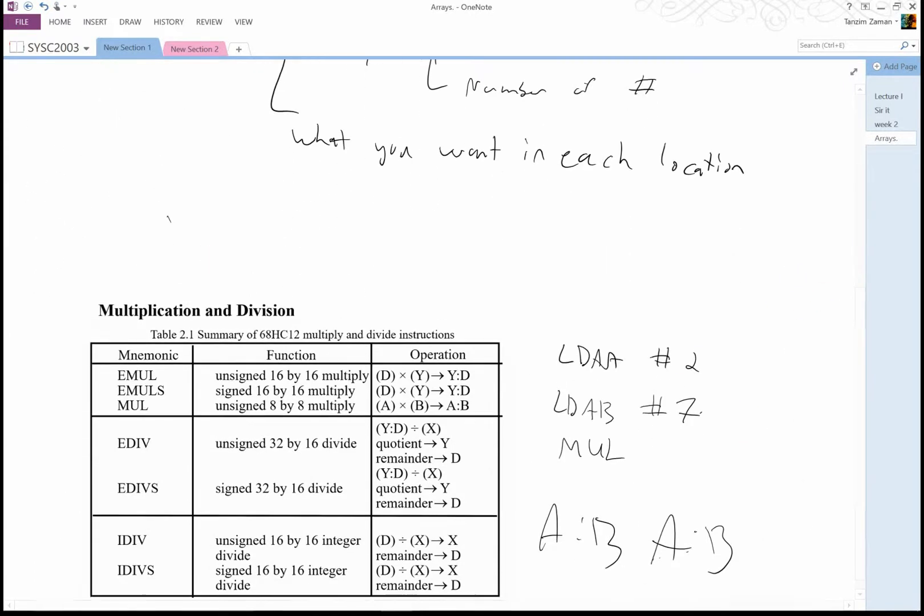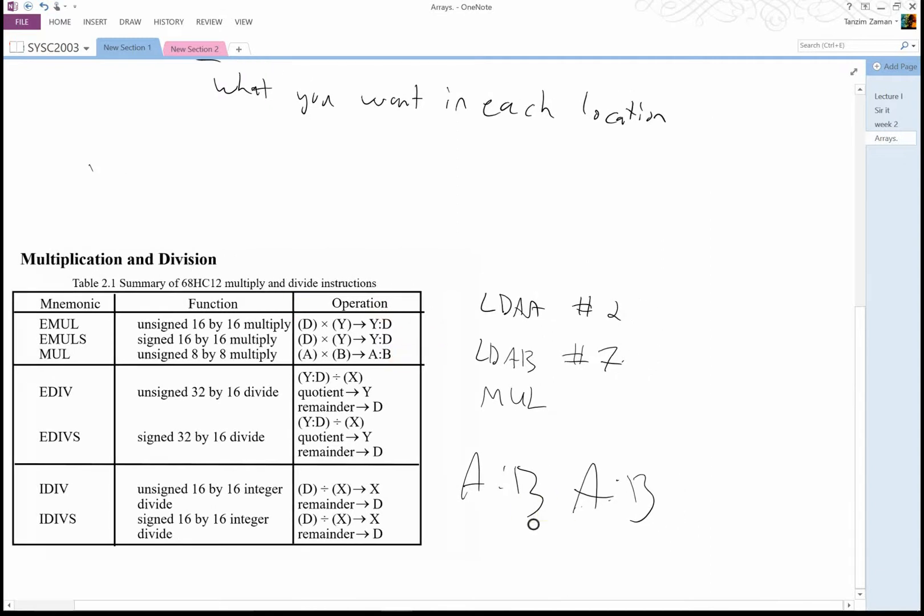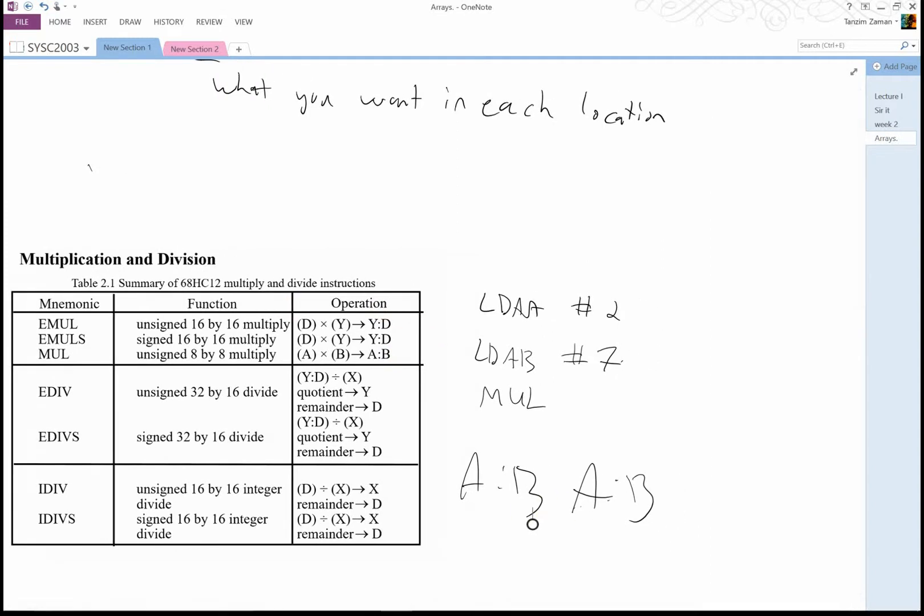So next we have multiplication and division. Let's go with multiplication first. Emol is unsigned 16 by 16 multiplication. So what happens, you take the register D multiply it with the register Y and your answer will go like that. Same thing for emols, the same thing for multiplication.